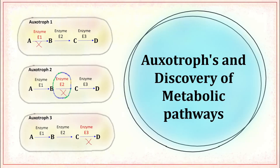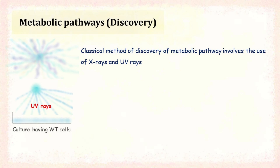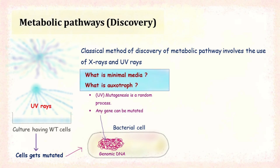Hi, let's talk about auxotrophs and the discovery of metabolic pathways. The classical method of discovery of a metabolic pathway involves the use of X-rays and UV rays. When a culture having wild type cells is exposed to X-rays or UV rays, the cells get mutated. The process of UV mutagenesis is a random process, so any gene can be mutated. Before moving further, let's understand the concept of minimal media and auxotrophs.